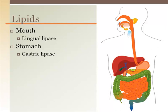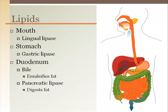Once the food, now chyme, enters the duodenum and the bicarbonate from the Brunner's glands raises the pH to neutral levels, the lingual and gastric lipases become ineffective. In the duodenum, bile from the gallbladder is released to emulsify the fat so that pancreatic lipase can finish the digestion of fat.